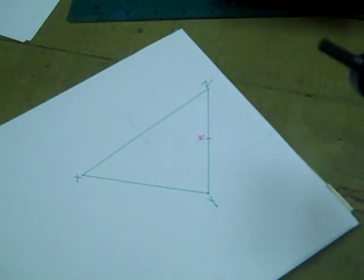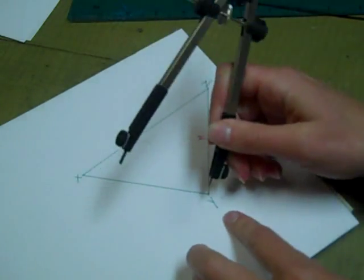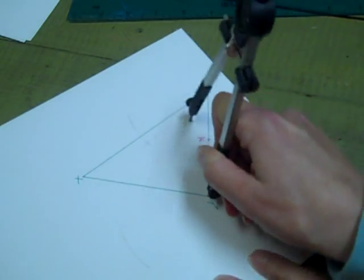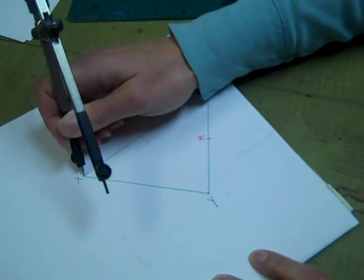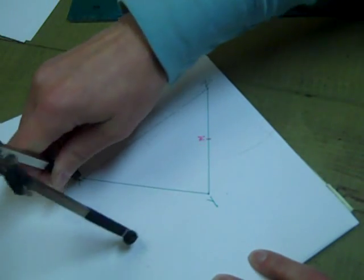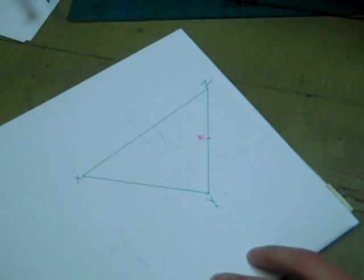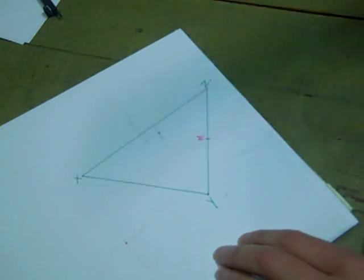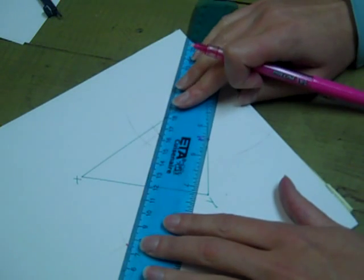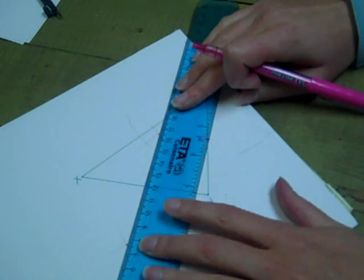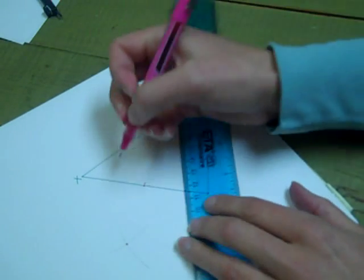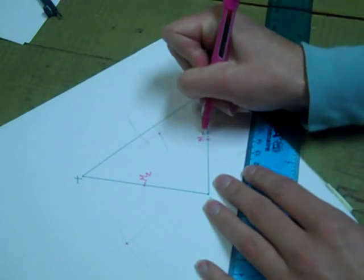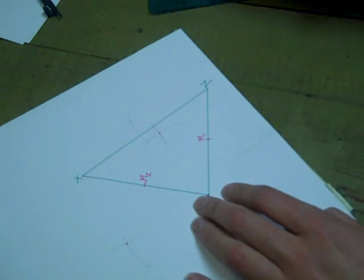I'm going to now do the same thing for line XY. Put my pointer on X above and below, and again I have two intersection points. I'm using my ruler to connect those points, but I'm not drawing a line. I'm just making a little mark, and I'll put that as M sub 2. I'll go back and make that M sub 1 for my first midpoint and second midpoint.